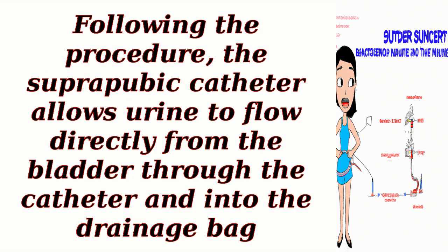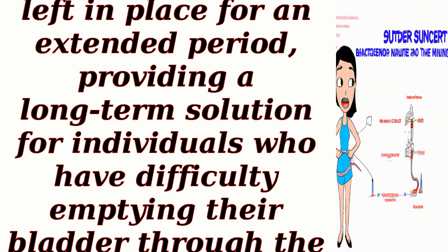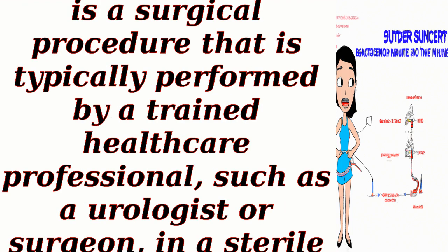Following the procedure, the suprapubic catheter allows urine to flow directly from the bladder through the catheter and into the drainage bag. The catheter can be left in place for an extended period, providing a long-term solution for individuals who have difficulty emptying their bladder through the usual urethral route. The insertion is a surgical procedure typically performed by a trained healthcare professional, such as a urologist or surgeon, in a sterile environment to minimize the risk of infection and complications.